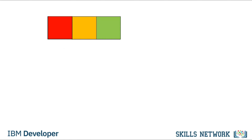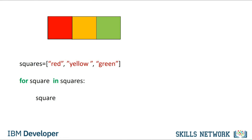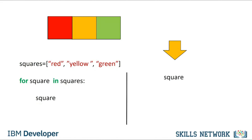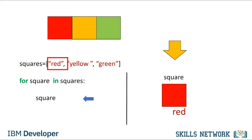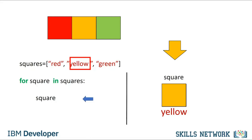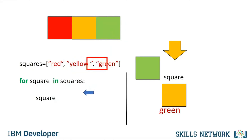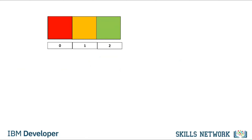We can also iterate through a list or tuple directly in Python — we do not even need to use indices. Here is the list squares. Each iteration of the list, we pass one element of the list squares to the variable square. For the first iteration the value of square is red; for the second iteration the value is yellow; for the final iteration the value of square is green. A useful function for iterating data is enumerate — it can be used to obtain the index and the element in the list.